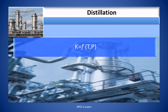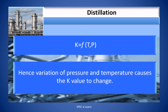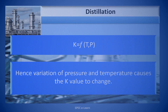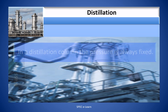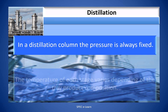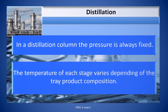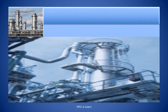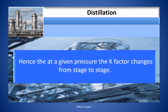K value is a function of temperature and pressure. Hence, variation of pressure and temperature causes the value to change. In a distillation column, the pressure is always fixed. The temperature of each stage varies depending on the tray product composition. Hence, at a given pressure, the K value changes from stage to stage.